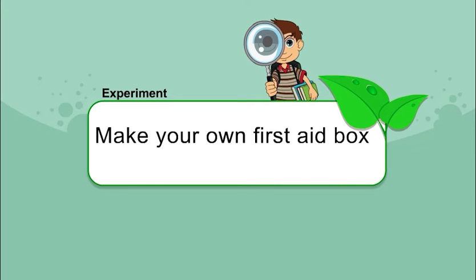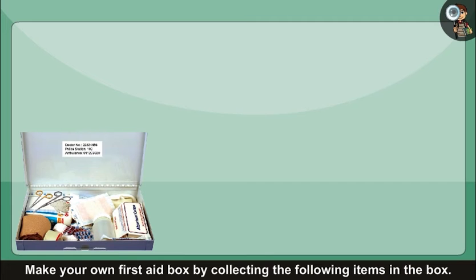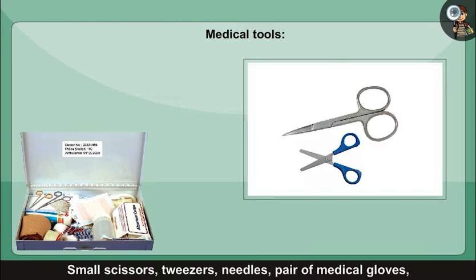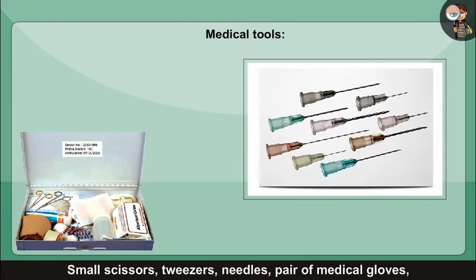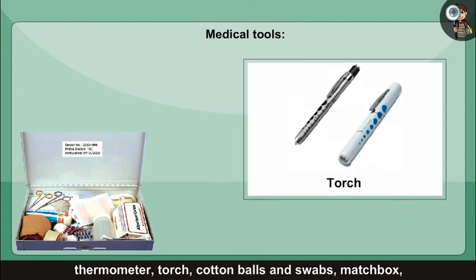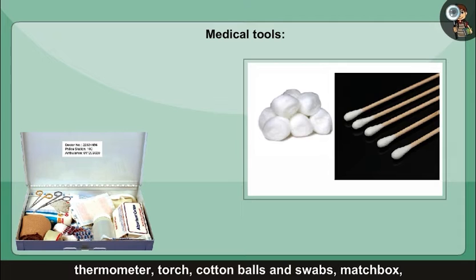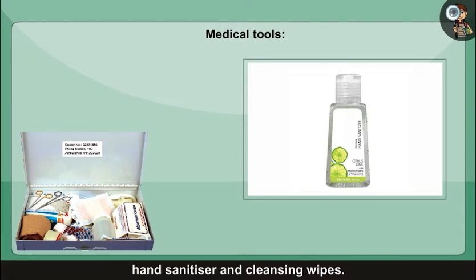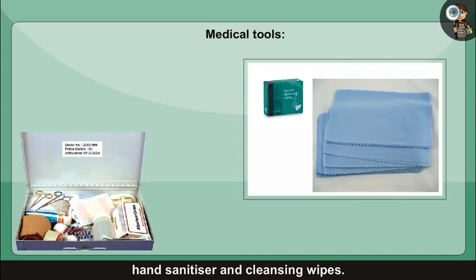Make your own first aid box by collecting the following items. Medical tools: small scissors, tweezers, needles, a pair of medical gloves, thermometer, torch, cotton balls and swabs, matchbox, hand sanitizer and cleansing swipes.